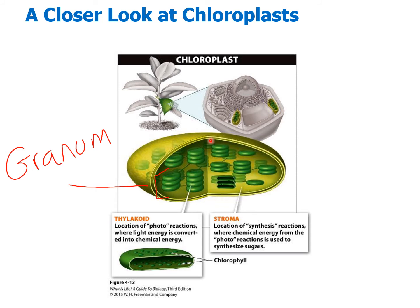If we open up this chloroplast, we find a thick fluid inside known as the stroma. Inside the chloroplast you can also see green disc-like structures — each one is known as a thylakoid. These thylakoids are stacked on top of each other, and each stack is known as a granum. Several stacks are called grana — grana is the plural of granum, which is one stack.